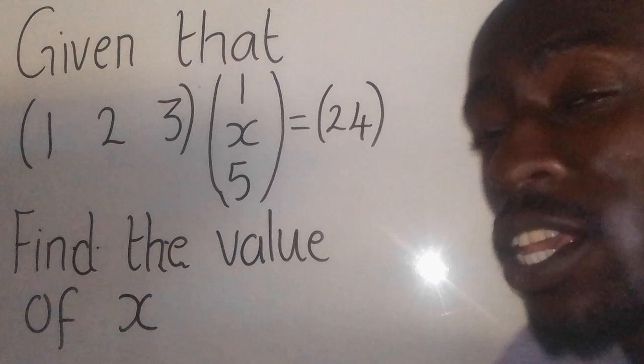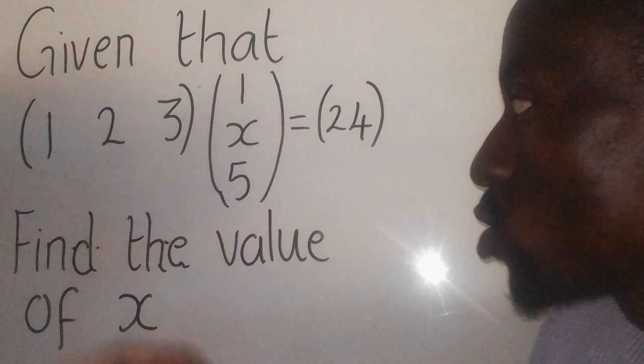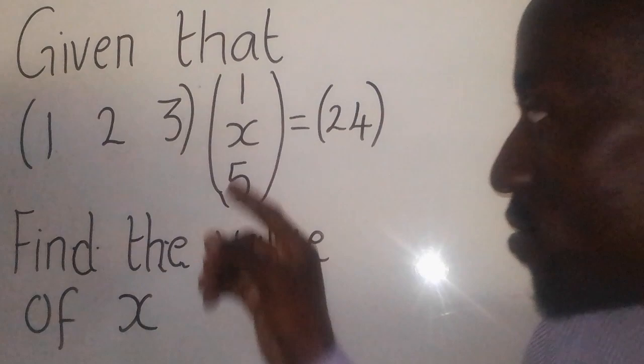When we talk of matrices, these are rectangular arrangements of numbers in rows and columns. This is a row, this is a column.